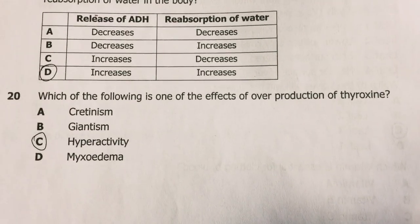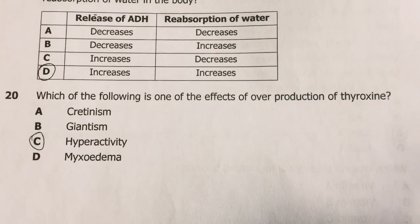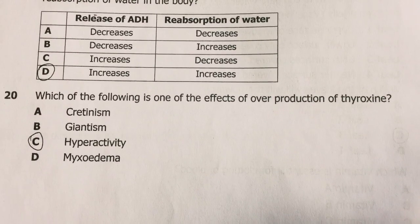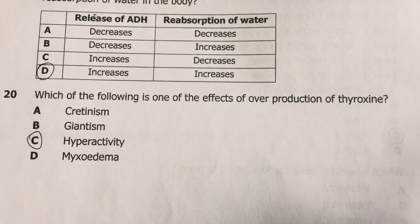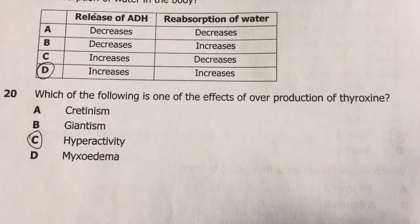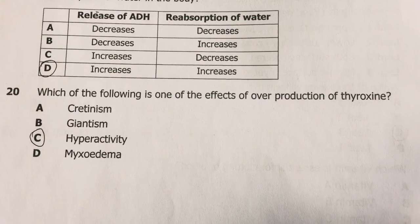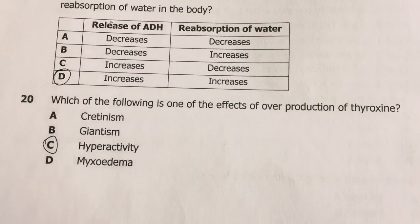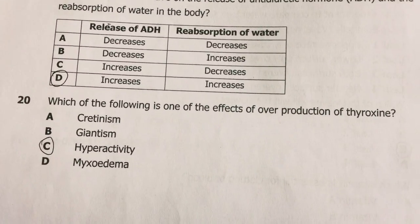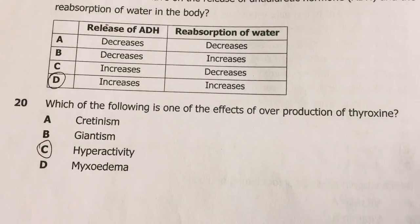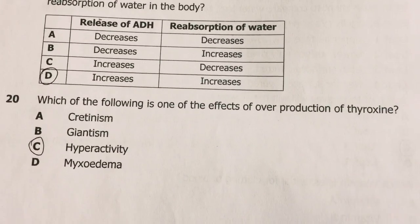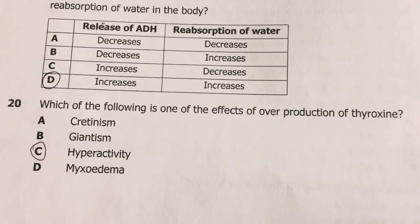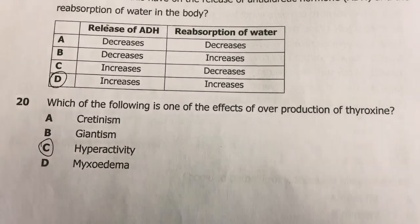Question 20, the last question: Which is one of the effects of overproduction of thyroxine? The answer is hyperactivity. That's all for this video — remember to subscribe and share these videos, and I'll see you in the next one.